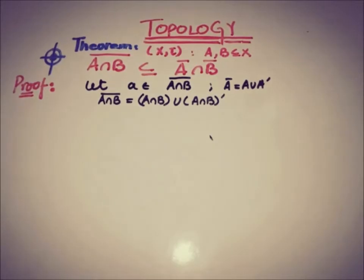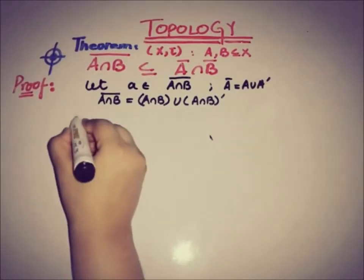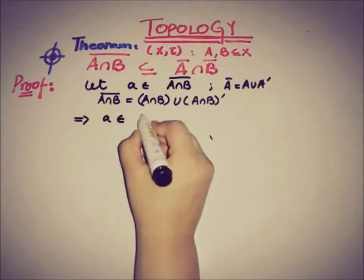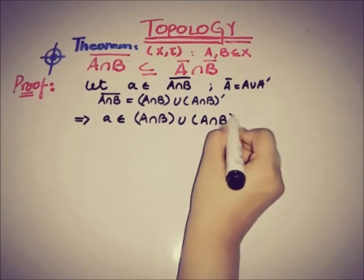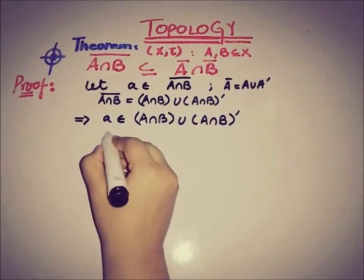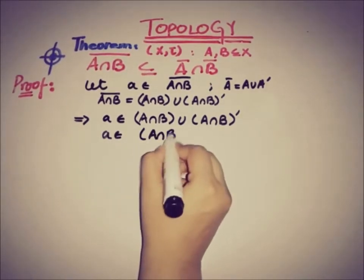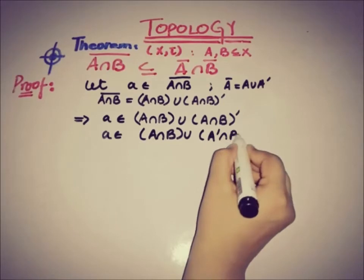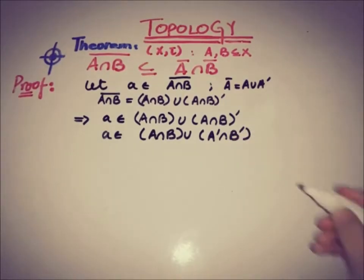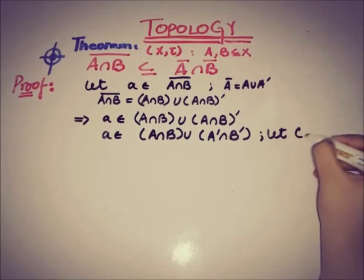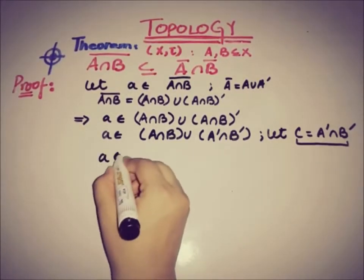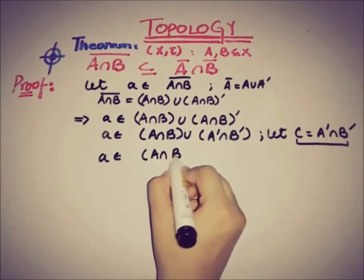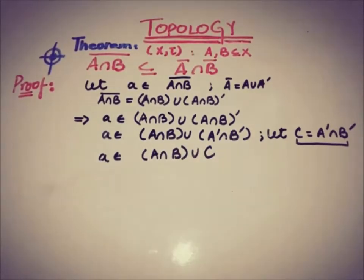If A is a member of A intersection B bar, then A is also a member of this set. This implies that A is a member of A intersection B, union A intersection B prime. We can also write it as A intersection B, union A-prime intersection B-prime. If we let C equal to A-prime intersection B-prime, then this equation can be written as A belongs to A intersection B, union C.